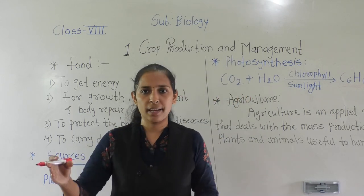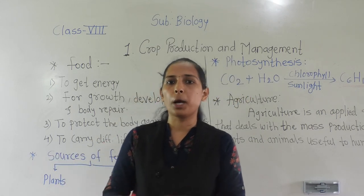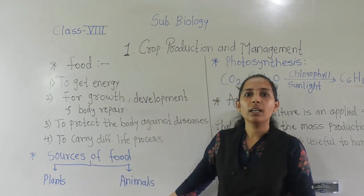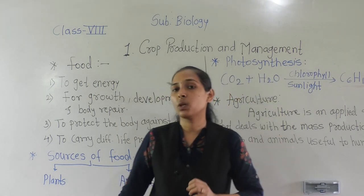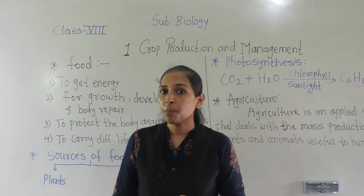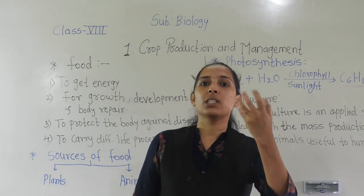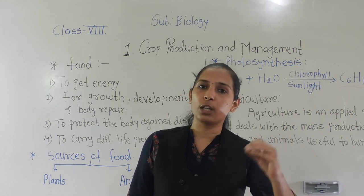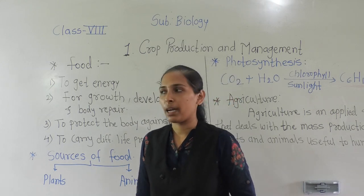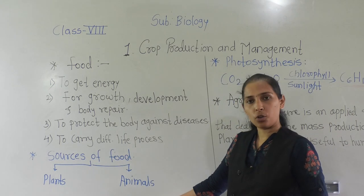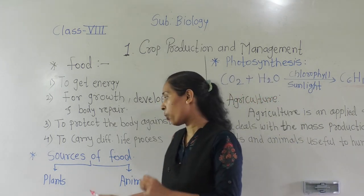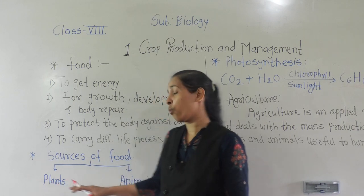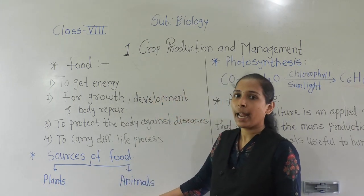All remaining organisms depend on plants for their food. Animals cannot make their own food; for their food they depend on others. Organisms that depend on others for their food are called heterotrophs. So plants are autotrophs while animals are heterotrophs.